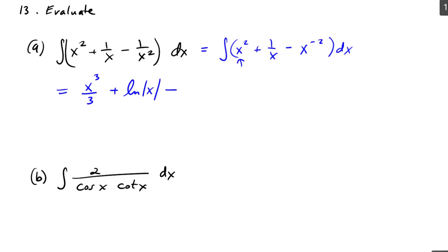plus integrating 1 over x is ln absolute value of x, minus integrating x to the minus 2. Remember, I add 1 to the exponent, so x to the minus 1 over minus 1 plus C. If I clean that up a little bit, x cubed over 3 plus ln absolute value of x plus I could write x to the minus 1 or 1 over x plus C.